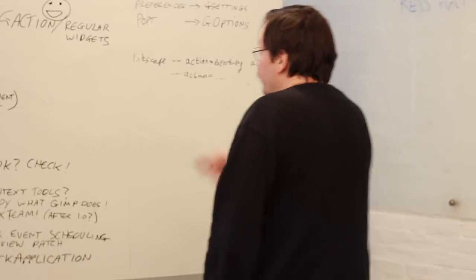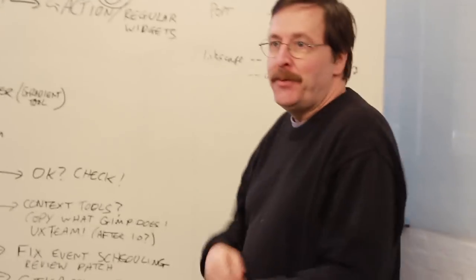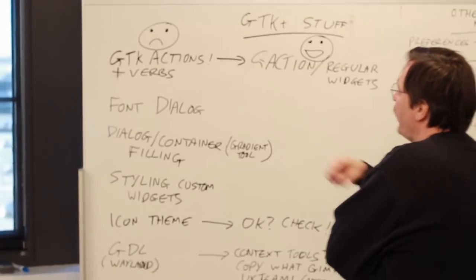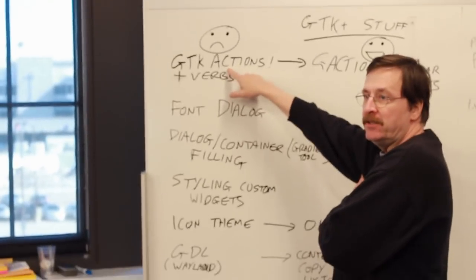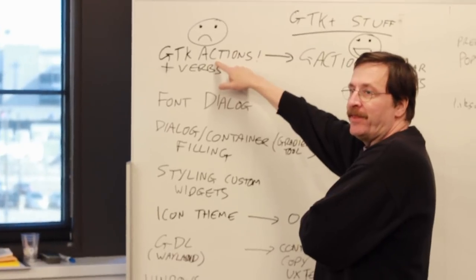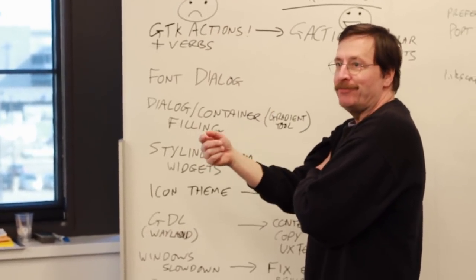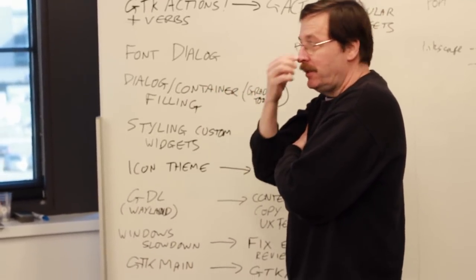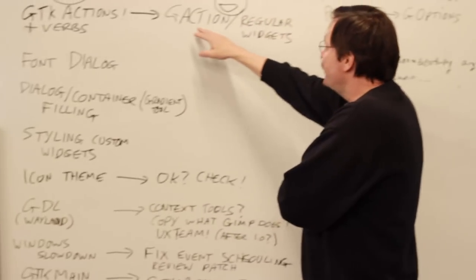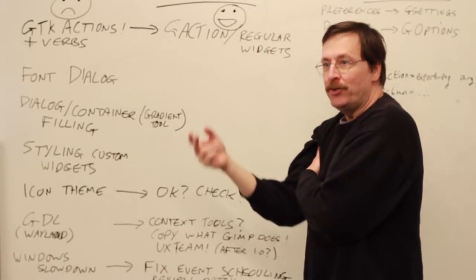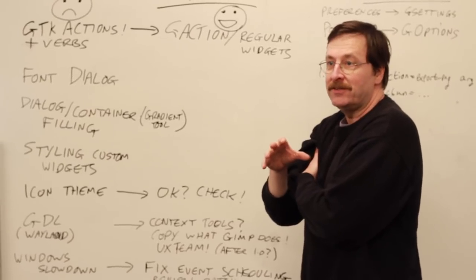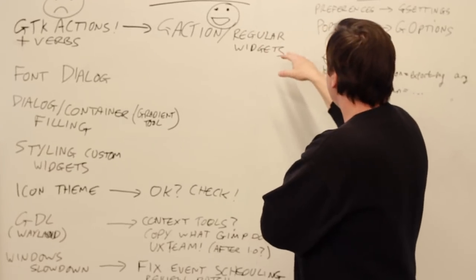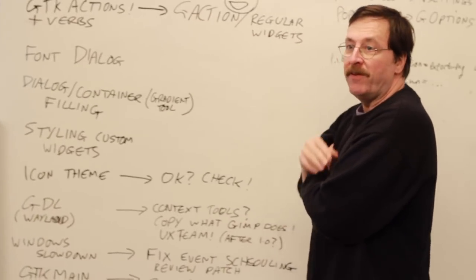We talked about quite a few things and have a whole list of problems. Most of the time was spent on two things. One is that GTK actions are deprecated — these are things a program can do that are tied to the graphical user interface. The replacement is the G action, which is something a program can do but not tied the same way to the interface; it's much more flexible. We talked about strategies for moving from one to the other and the advantages.